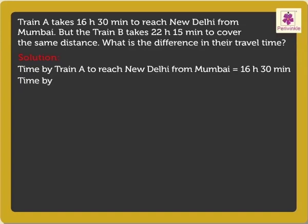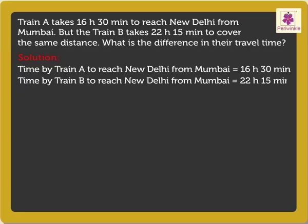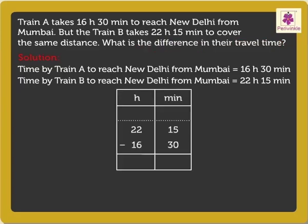Time taken by train B to reach New Delhi from Mumbai is equal to 22 hours 15 minutes. We have to find the difference in their travel time. To do this, we subtract 16 hours 30 minutes from 22 hours 15 minutes.